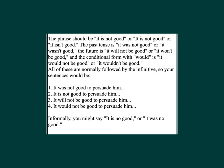The phrase forms: present — 'It is not good' or 'It isn't good.' Past tense — 'It was not good' or 'It wasn't good.' Future — 'It will not be good' or 'It won't be good.' Conditional with 'would' — 'It would not be good' or 'It wouldn't be good.'